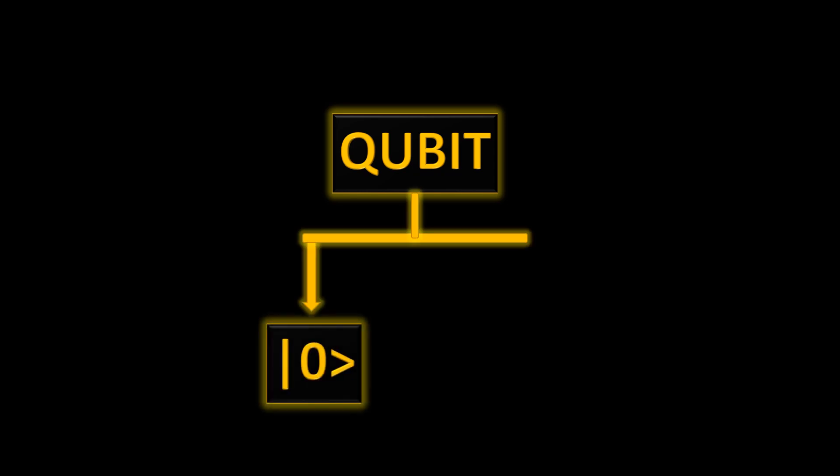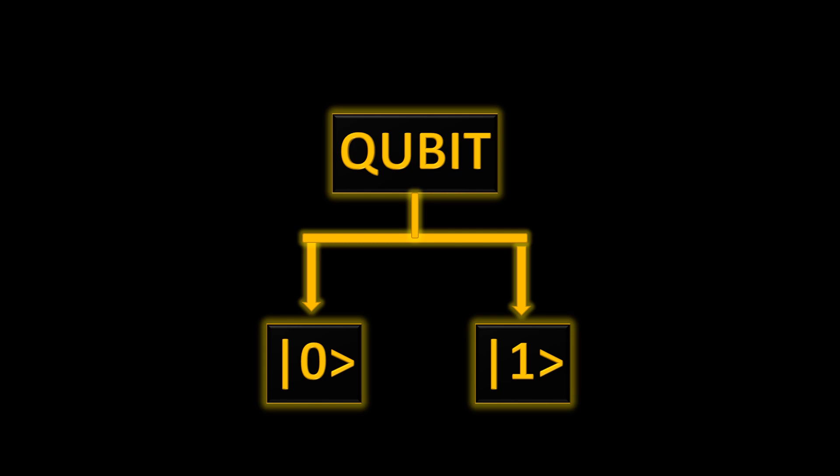Most of you must be familiar with qubit. So a qubit can be in either zero ket or one ket. So zero ket and one ket are two mutually orthogonal states that a qubit can take.